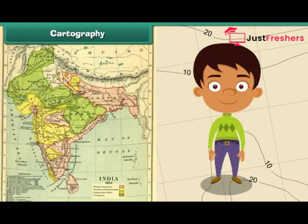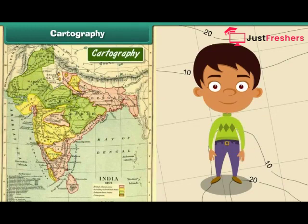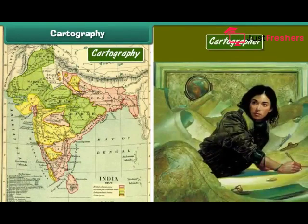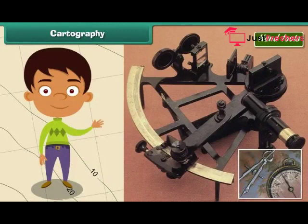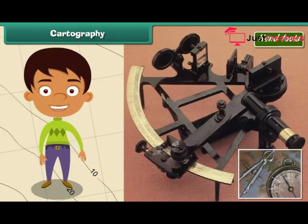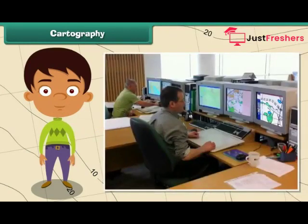Cartography is the science of drawing maps. The person who draws maps is known as a cartographer. In the olden days, maps were drawn using hand tools. Hand cartography was a time-consuming and difficult process, and maps drawn using hand tools were also inaccurate. But nowadays, maps are drawn with the help of computer software, and hence they are more accurate.